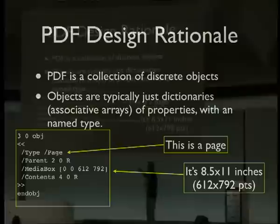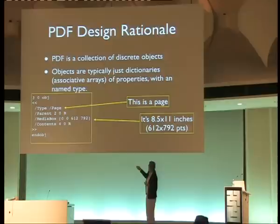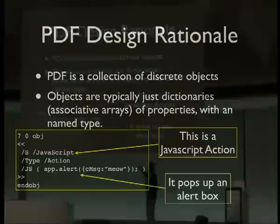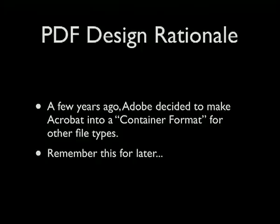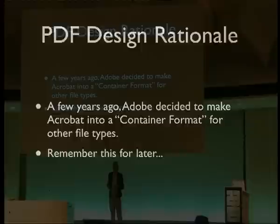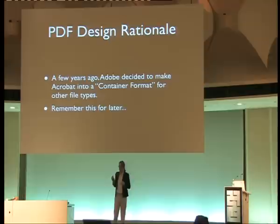What PDF is is basically just a bunch of objects connected together in a tree. You can write it — it's all basically 7-bit ASCII, although it's 8-bit clean. This is an object: it says it's a page and it's this big. This is a JavaScript action, and that's the JavaScript that gets run. It's actually pretty easy to read. Adobe has conceptually recast PDF as a container format — sort of an archive that you can put a bunch of other files into, and you get the exact same files back out again sometimes later.